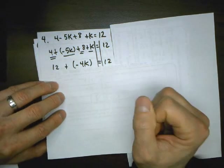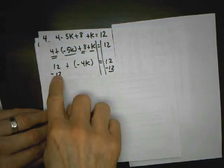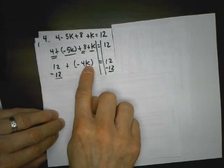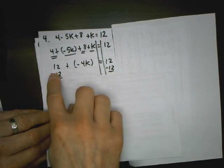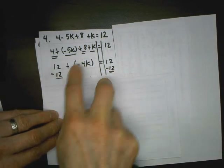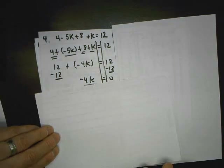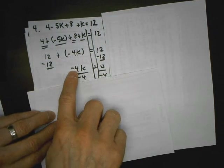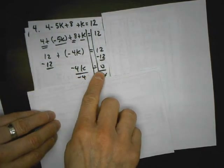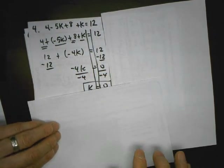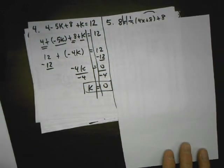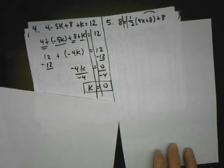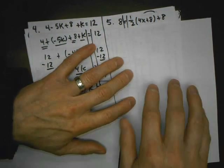Now that both sides are simplified, I can go to step two. There are no k's on this side, so step two is done — get our variables on one side. Step three: isolate the variable. I work farthest from the variable and do the opposite, so if it's positive 12, I subtract 12 from both sides. I get negative four k equals zero. Then I divide both sides by negative four. Zero divided by anything is just zero — that's our solution.